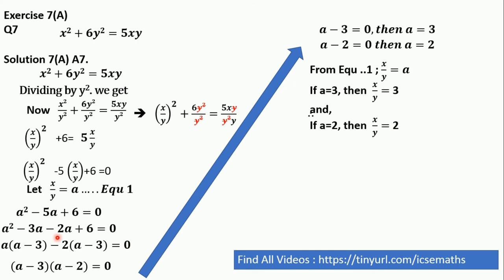now if we put this value that is a is equal to 3 or a is equal to 2, then if a is equal to 3, then x by y is equal to 3, and if a is equal to 2, then x by y is equal to 2. Therefore, x by y is equal to 3 or 2, and that is your answer.